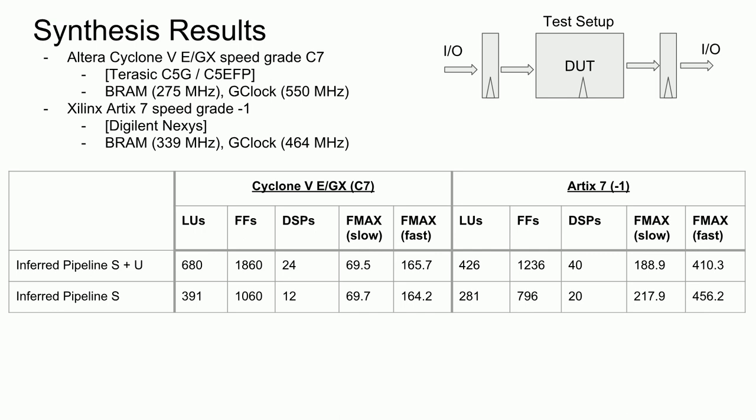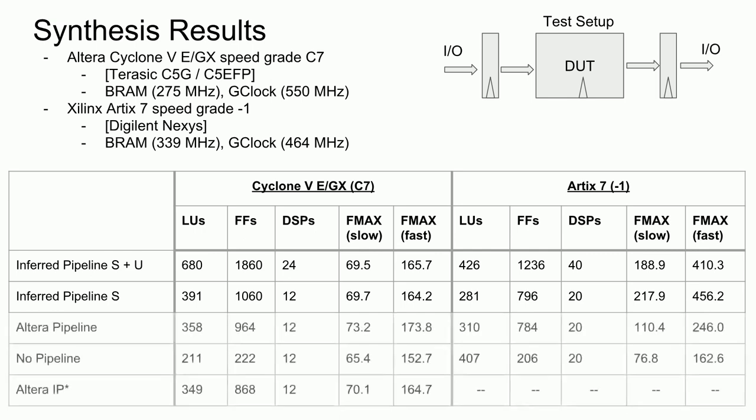It occurred to me that Quartus, the Altera synthesis tool, was not correctly inferring a pipeline multiplier, and hence why the frequency was so low. It turns out that Altera defines what a pipeline multiplier should look like slightly differently, so maybe that's why the implementation was so slow. Here was the result, along with another comparison using no pipeline, and a sanity check specifically instantiating an Altera pipeline multiplier IP. Interestingly, the inferred block did slightly better than the explicit IP, but only marginally so.